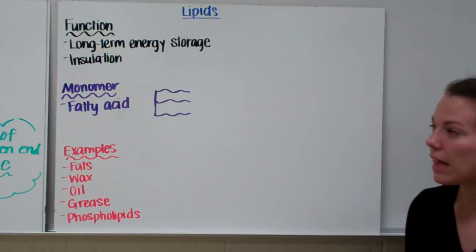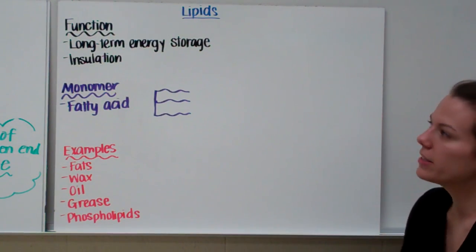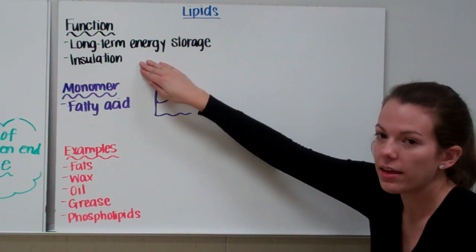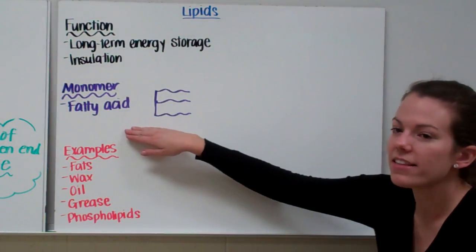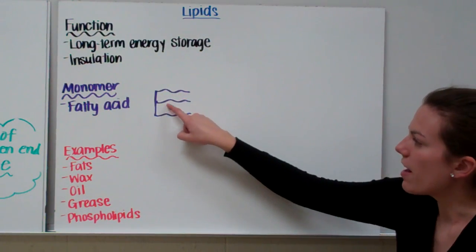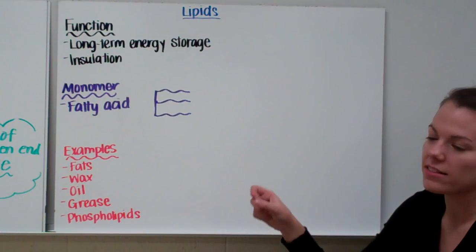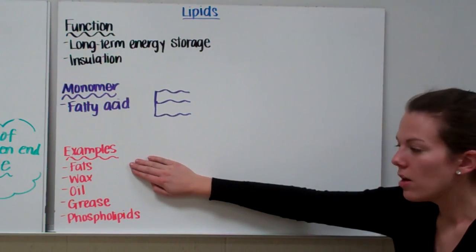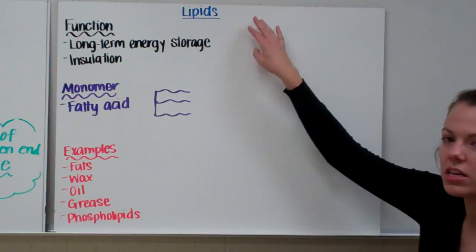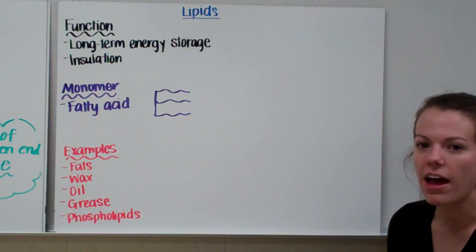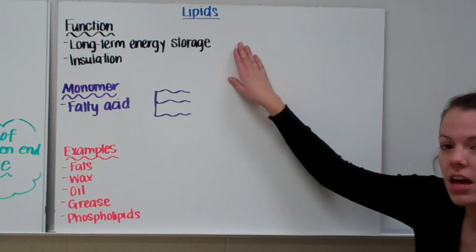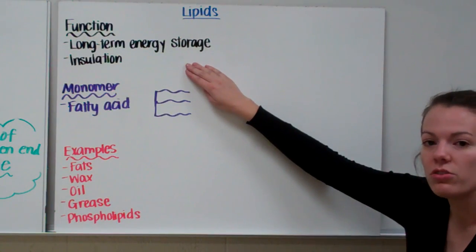Now let's take a look at lipids — fats, oils, and grease. Their function is to store energy for a long period of time, and they can also be used to insulate things. The monomer or building block of lipids is a fatty acid. Fatty acids don't always look the same; a triglyceride has three fatty acid tails, and each of those squiggly lines is a fatty acid. Examples of lipids include fats, wax, oil, grease, and phospholipids. Think of a fat bear in winter — it needs fat to hibernate without eating, and to stay warm. So lipids store energy for a long period of time and are used for insulation.